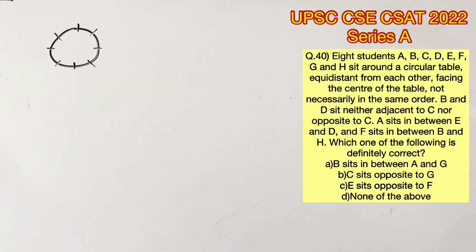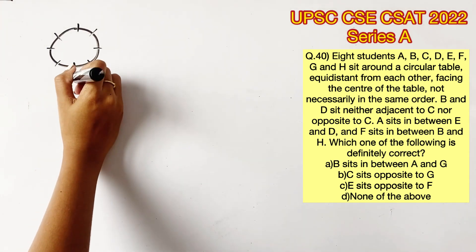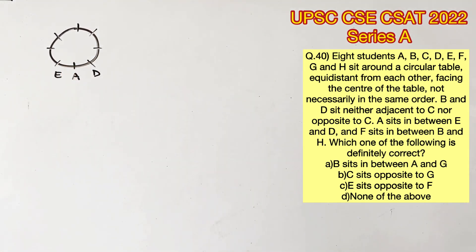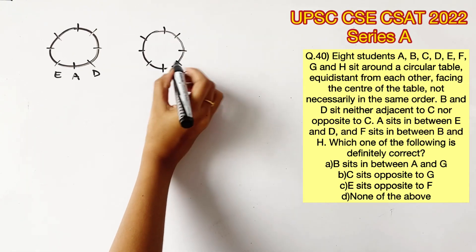It's given that B and D sit neither adjacent to C nor opposite to C. Right now we cannot mark it, so let's go to the next condition. A sits in between E and D. There can be two possibilities where E can be at the left or right, so let's draw both possibilities.